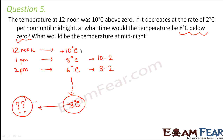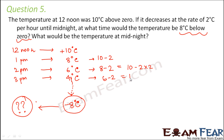Looking at the pattern: at 1 pm, temperature is 10 minus 2×1; at 2 pm it is 10 minus 2×2; at 3 pm it is 10 minus 2×3. The temperature follows a clear pattern. We want to know at what time it will be minus 8°C. You could continue the table, but let us use equations to solve it more smartly.